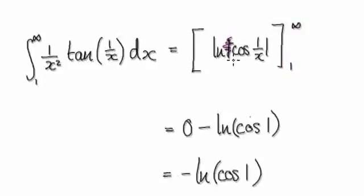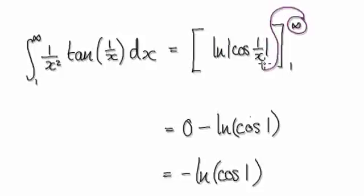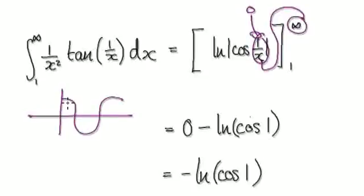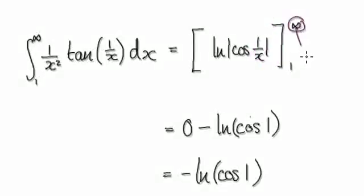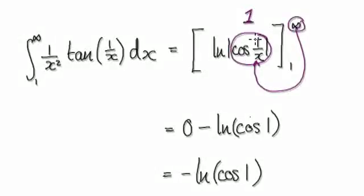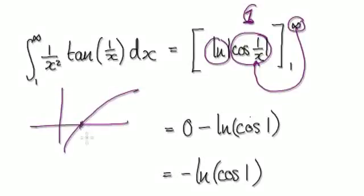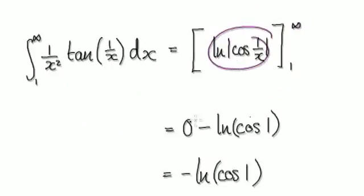Integrating this from 1 to infinity, it will be negative natural log of cos(1/x). Since we're moving from 1 to infinity it's never going to be negative, so we can ignore the absolute sign. If you put a very big number in here, 1 over a big number will head towards 0. And if you look at cos of 0, it is heading towards 1. So if you put a big number in here, this whole thing will approach 1, and then natural log of 1 will be 0. So the whole expression becomes 0 at the upper limit.